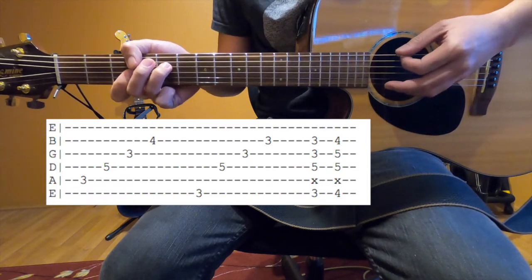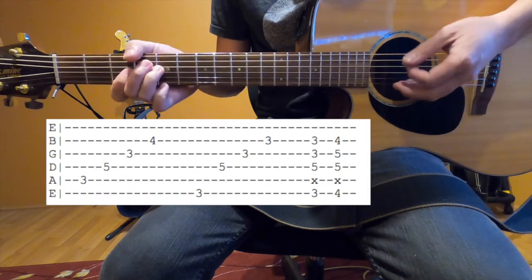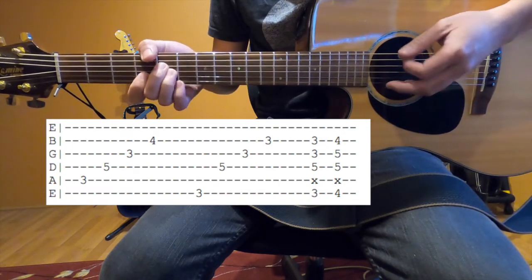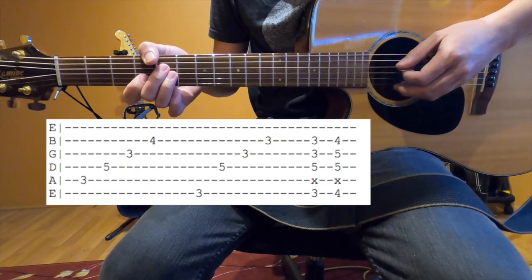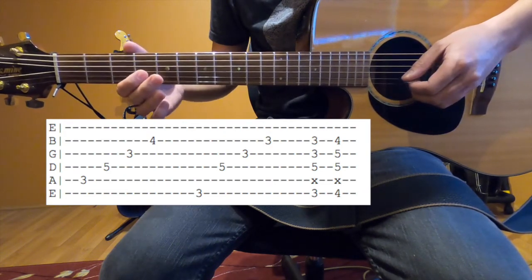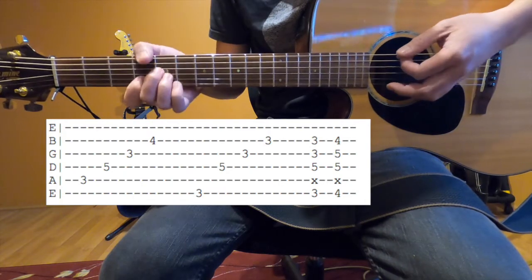And then it's that G minor again, and then it goes to G sharp major 7, which is 4 on the E string, 5 on the D, 5 on the G, and 4 on the B.